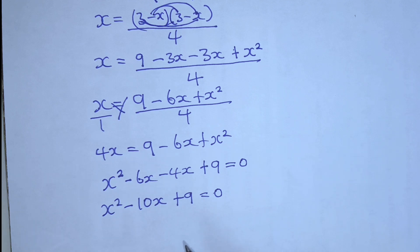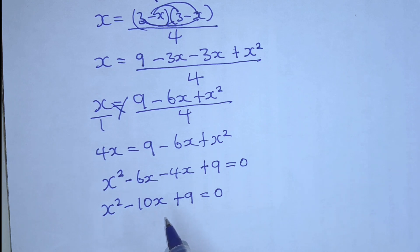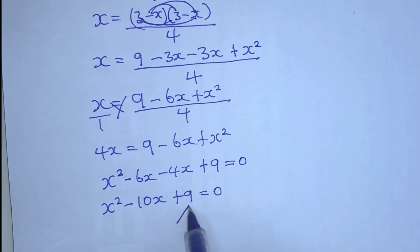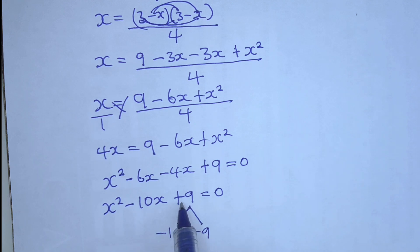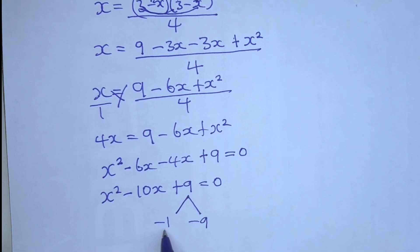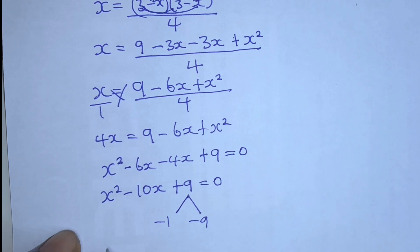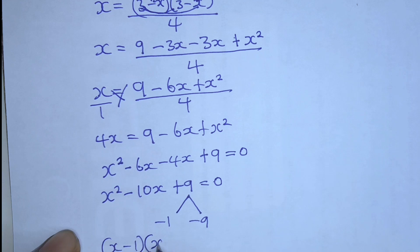To use the factorization method, we have to find two numbers: when we multiply them they give us 9, and when we add them they give us negative 10. We have minus 1 and minus 9: minus 1 times minus 9 gives positive 9, and minus 1 plus minus 9 gives negative 10. Therefore, we have (x minus 1)(x minus 9) is equal to 0.